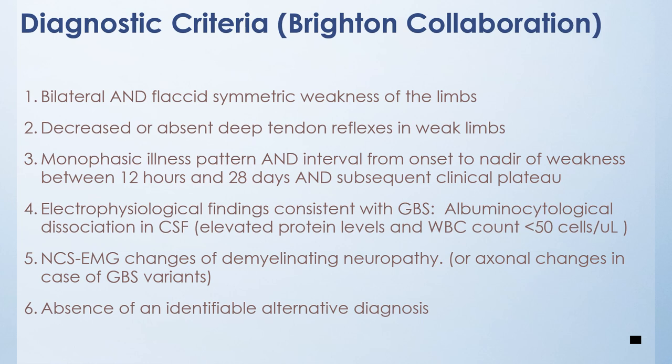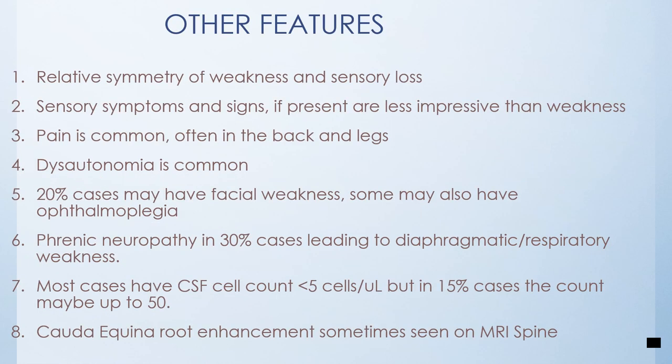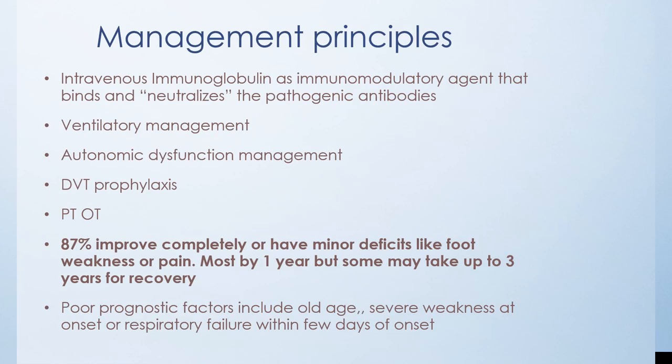These findings include albuminocytological dissociation in CSF and nerve conduction study changes of demyelinating neuropathy, or sometimes axonal changes in GBS variants. There must also be absence of an identifiable alternative diagnosis. Other features include relative symmetry of weakness and sensory loss; pain is common, often in the back and legs; dysautonomia is common; 20% may have facial weakness; some may have ophthalmoplegia; and phrenic neuropathy is seen in 30% of cases, leading to diaphragmatic paralysis and respiratory weakness.